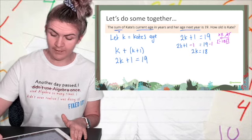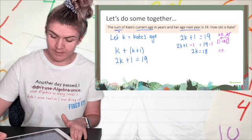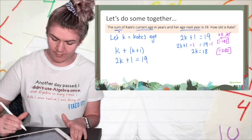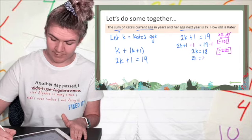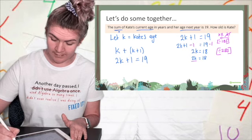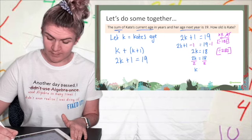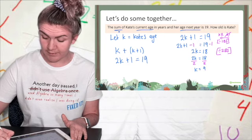Plus 1 take 1 cancels. I have 2k left and I have 18. I've gotten rid of the 1, now I need to get rid of the 2. So I'm dividing by 2 on both sides. Write out my equation again, add in my operation. 2 and 2 cancel, I got k. 18 divided by 2 is 9.